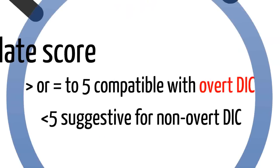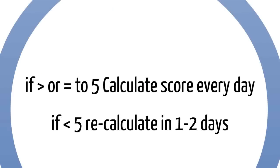Now let's calculate the score. If you get a score greater than or equal to 5, that's compatible with overt DIC — a definite diagnosis. For patients scoring less than 5, this is suggestive of non-overt DIC. If the score is greater than or equal to 5, you need to recalculate the score every day to monitor whether the patient is improving or getting worse. If less than 5, and you have high clinical suspicion, recalculate in 1 to 2 days and see where the score has trended.